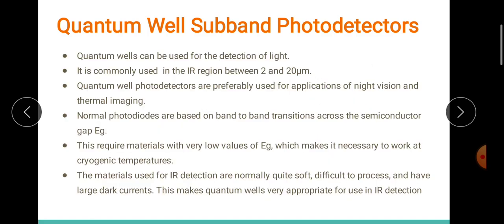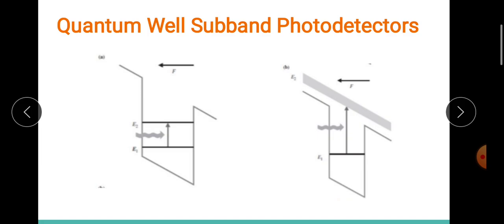Quantum well-based photodetectors are used in the infrared region, and we can easily tune the wavelength for such devices using fabrication techniques. The infrared range they use is nearly 2 to 20 micrometers. The transitions in infrared detection in quantum wells may be either the inter-subband transition or a transition from a bound state to outside of the potential well. These type of photodetectors generate a current by tunneling of carriers outside the well.